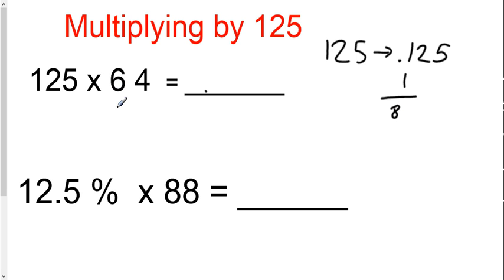So you're going to take the non-125 number and multiply it by one-eighth. Now remember, as before, when you're multiplying by fractions, you're basically multiplying by the numerator and dividing by the denominator. So 64 divided by 8 is 8, times 1 is 8. So you write the 8.